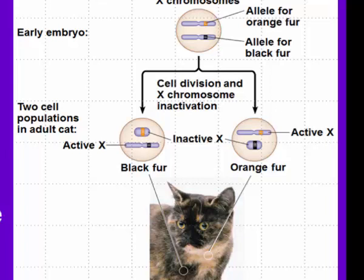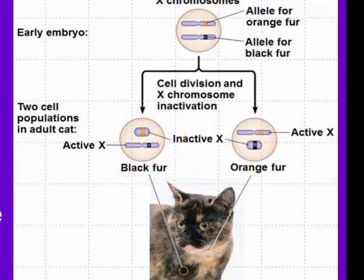During embryonic development, in some of her cells, the chromosome containing the orange fur gene becomes inactivated and condenses into a Barr body, leaving only the chromosome containing the black fur allele active — so those cells will produce black fur. In other cells, the chromosome containing the black fur allele condenses and becomes the Barr body, leaving those cells to express the orange characteristic.